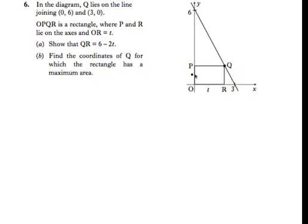For which this rectangle has a maximum area. Now if this has to change somehow to produce a maximum, which implies that you could have a rectangle with a lesser area that is changing somehow, then we should be looking at Q and imagining Q moving along this line.